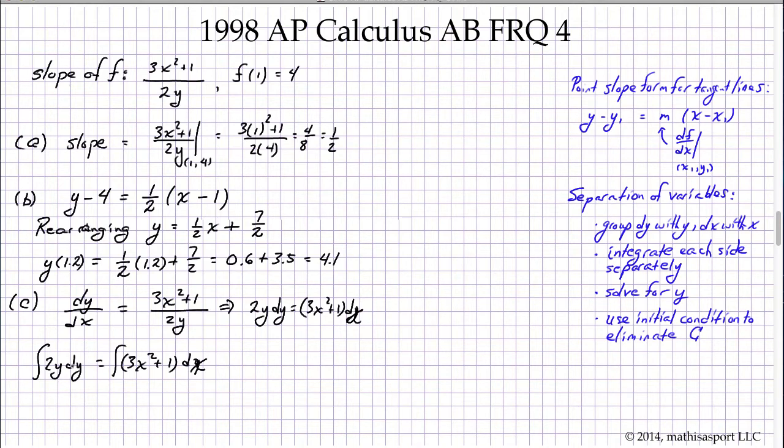Well the integral of y with respect to y is y squared over 2. But that over 2 is cancelled by the factor of 2 here. So this left-hand side is going to give us y squared plus c. And again, when we integrate x squared, we're going to get x cubed over 3. But that over 3 is cancelled by the 3 here. So we have x cubed. The integral of 1 with respect to x is just x, and again, plus c.